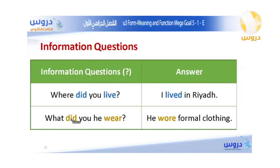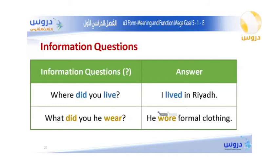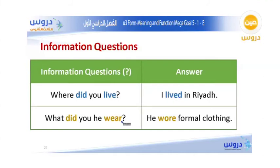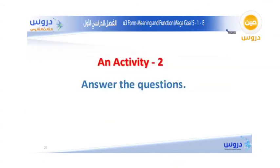The second information question: What did you wear? — We wore formal clothing. Here, 'live' is an example of a regular verb because we only add -ed to change it to the past. And 'wear/wore' is an example of an irregular verb because the whole form changes. This is the difference between regular and irregular verbs.